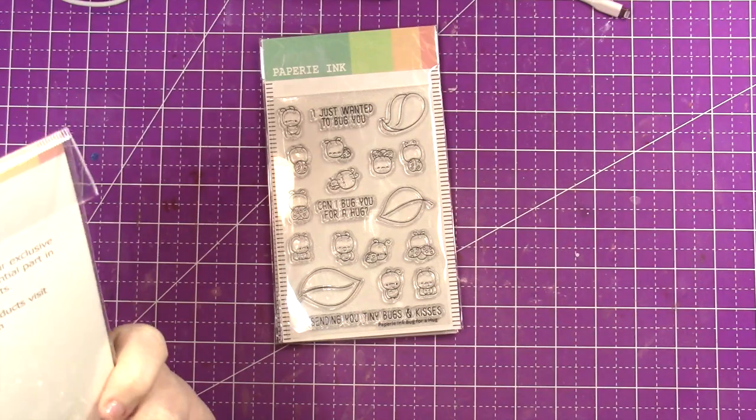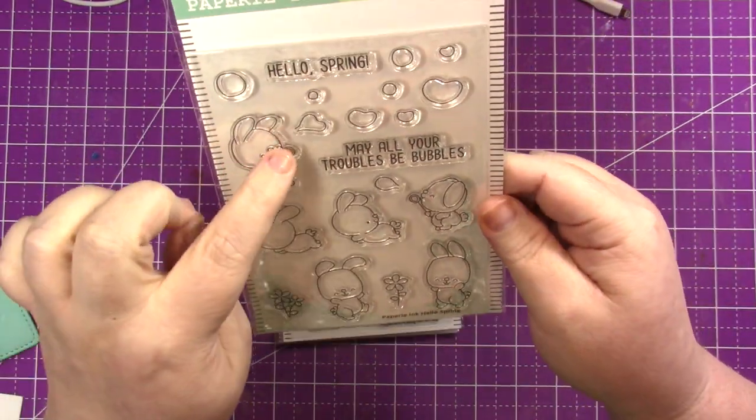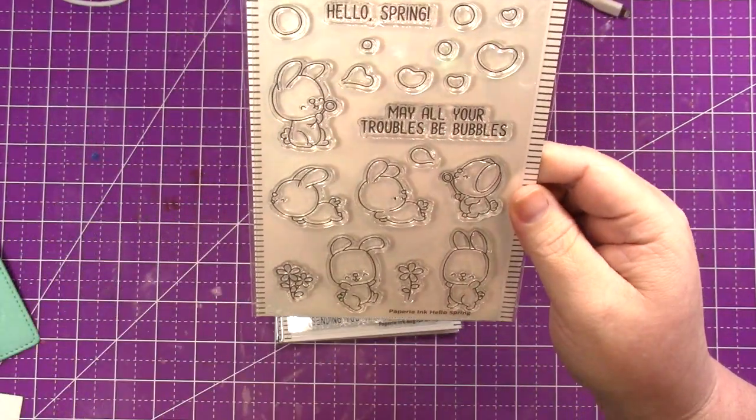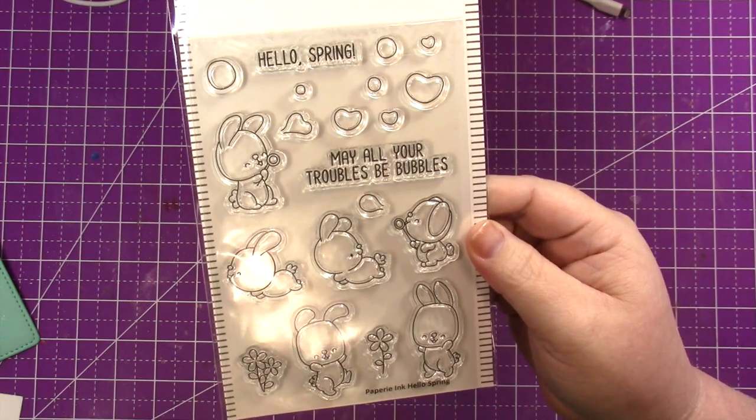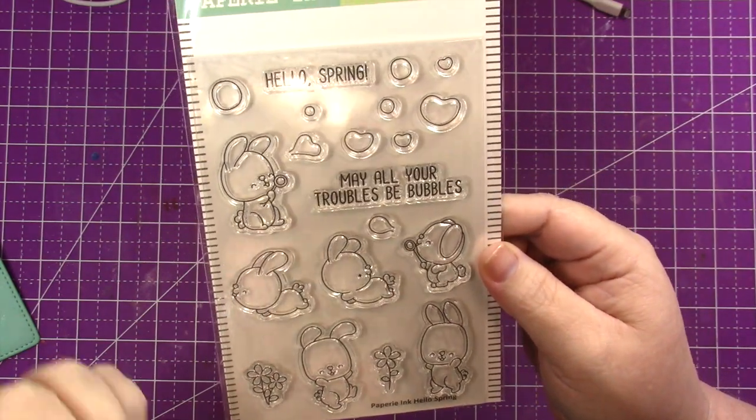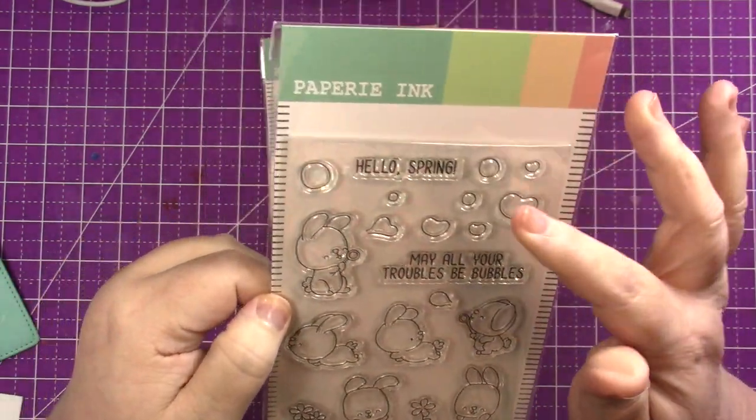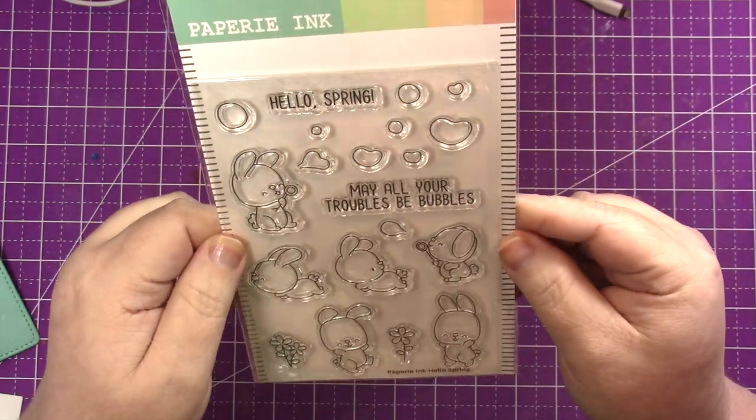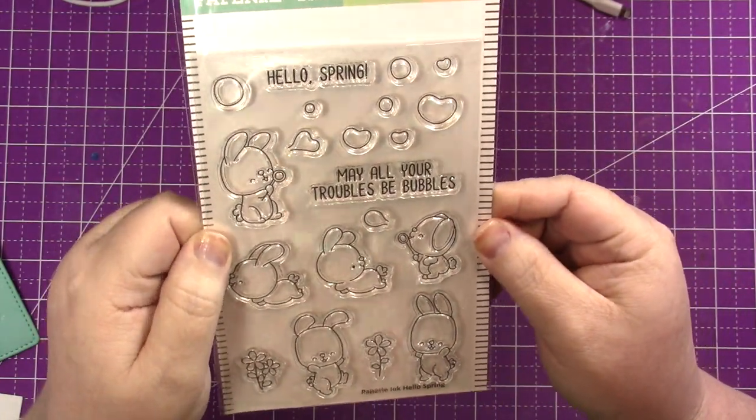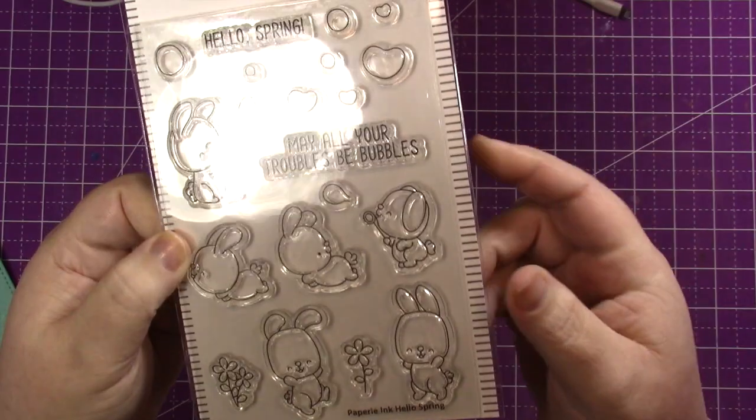This one's called Hello Spring. So it's bunny with bubbles. These bubbles, I remember, you guys remember I have that one font stamp set that has the mice with the bubbles. So so cute. Hello spring, may all your troubles be bubbles. Look at these two little bunnies down here. Oh my god, they're so cute.